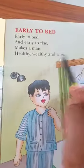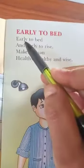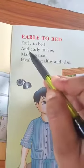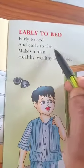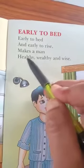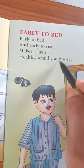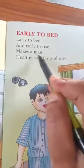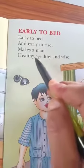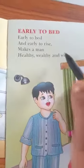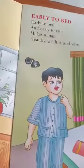So children, learn it again. Early to bed and early to rise. Make some man healthy, wealthy and wise. Make some man healthy, wealthy and wise. So children, learn it at your home again and again.